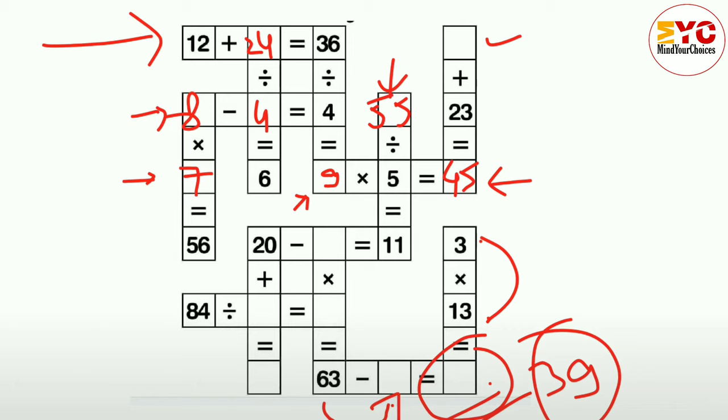By which number we have to add 23, we get 45. It means we have to subtract 45 and 23, we get 22. It means 22 plus 23 is equal to 25.